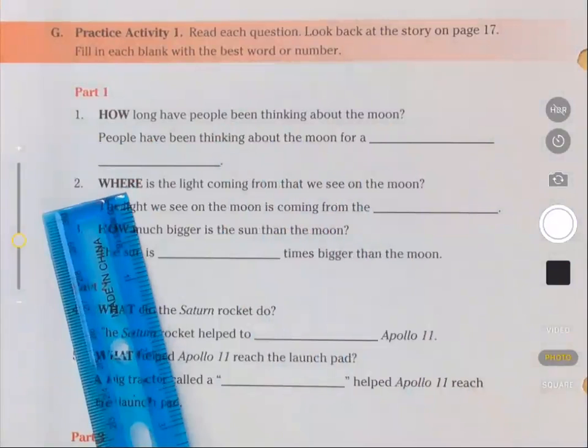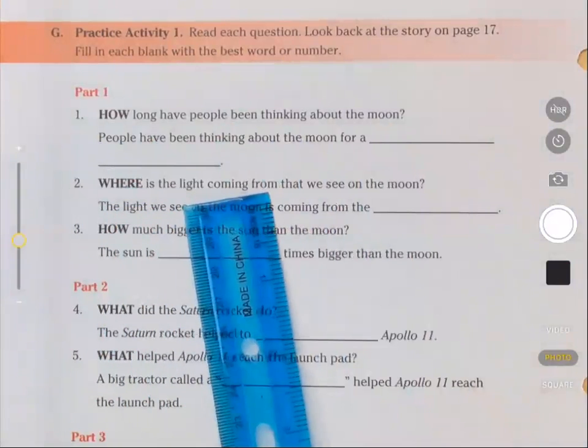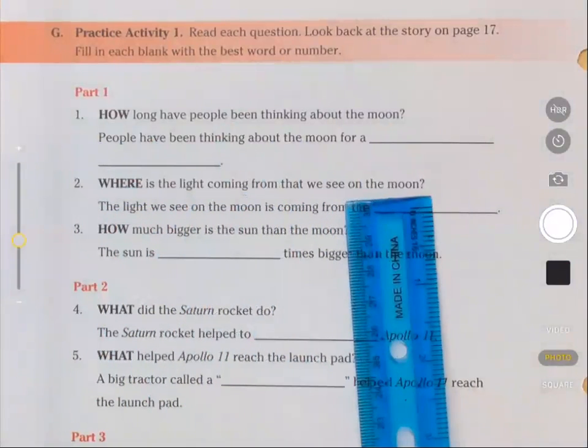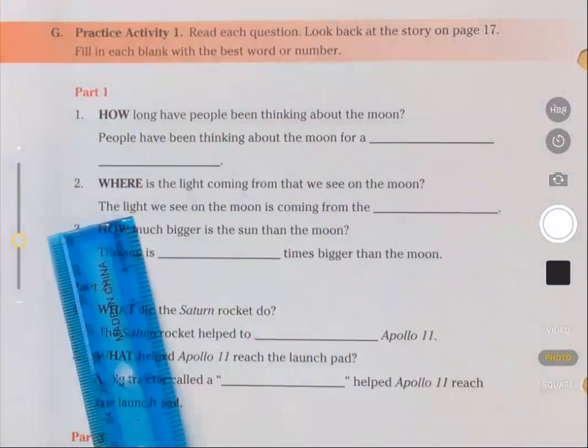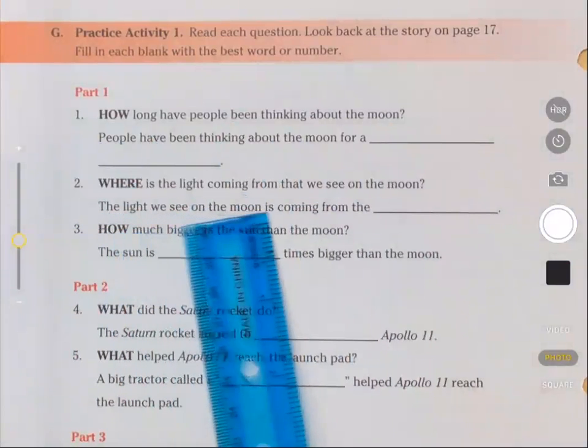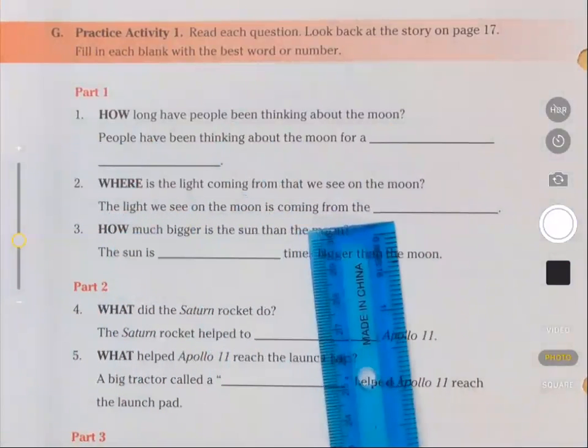Question two: Where is the light coming from that we see on the moon? The light we see on the moon is coming from blank.